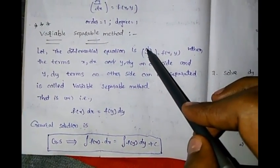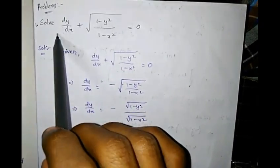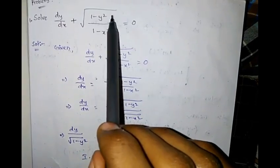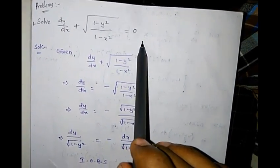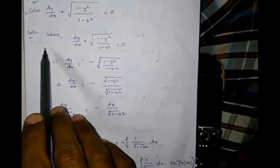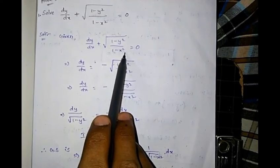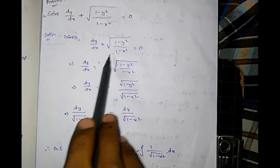Now the first problem: Solve dy/dx + √(1−y²)/√(1−x²) = 0. We rearrange to get dy/dx = −√(1−y²)/√(1−x²).